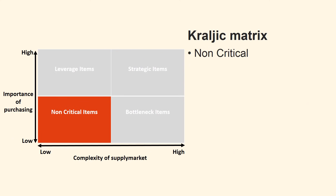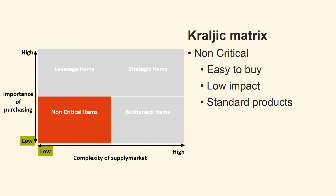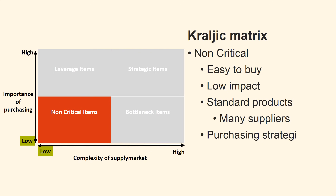Non-critical items are products that are easy to buy and also have a relatively low impact on the financial results. The quality is standardised. They could be standard products such as screws, nuts, etc. They are products where there are many possible suppliers. Administratively, these purchases take up much of the time in the purchasing department, as there are many of them, and the department often treats each purchase individually to find the best deal. The recommended purchasing strategy is to reduce time and money spent on the purchase of these products by enhancing product standardisation and efficient processing, by decreasing the number of products and automating the purchases.